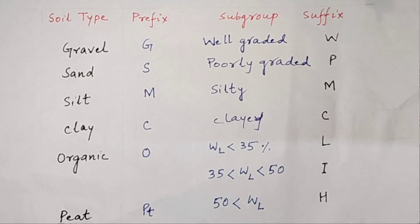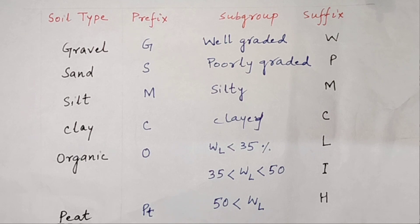The only difference is in the case of subgroups. If the liquid limit is less than 35, it is low plasticity. If the liquid limit is between 35 to 55, it is intermediate plasticity. And if the liquid limit is more than 50, it is highly plastic. So here we have low and high replaced with low, intermediate and high as the modification from the USCS.